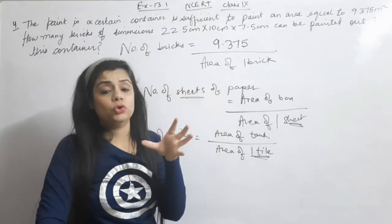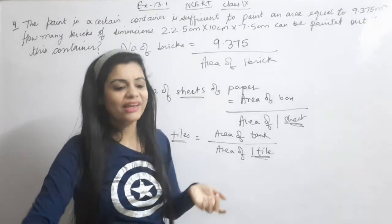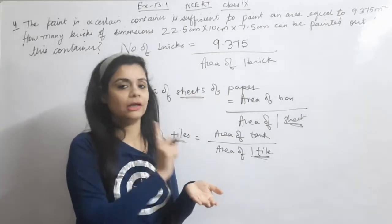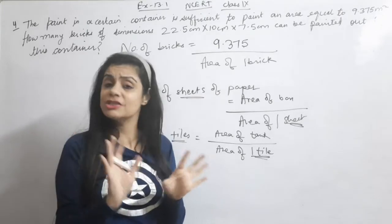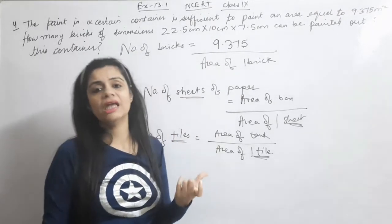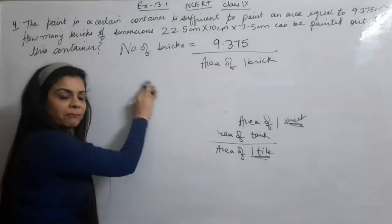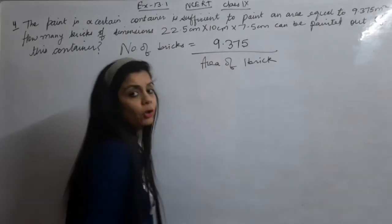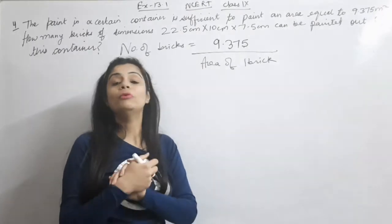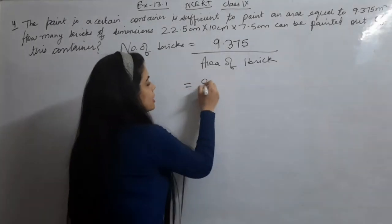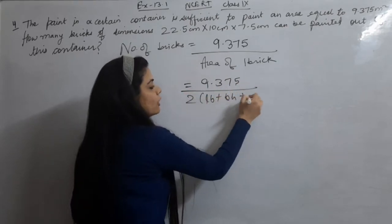The brick is painted from all sides — front, back, top, bottom, and side faces — so we use total surface area. The brick is in cuboid shape, so we use the total surface area formula of a cuboid: 2 into LB plus BH plus LH.